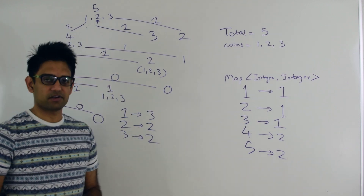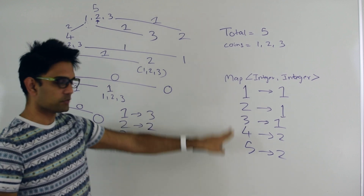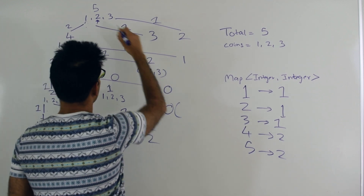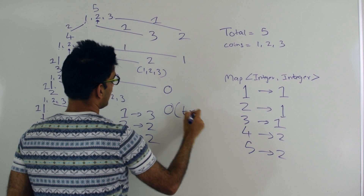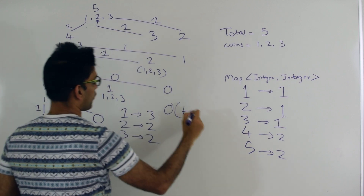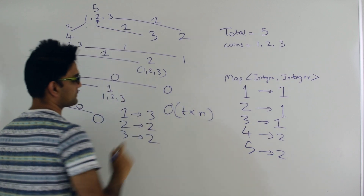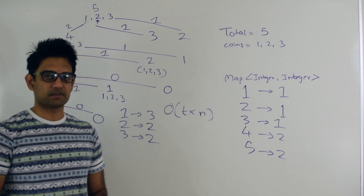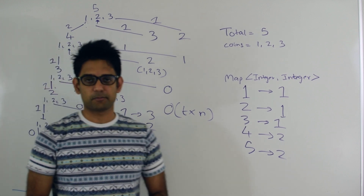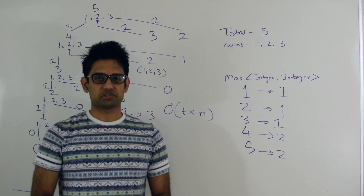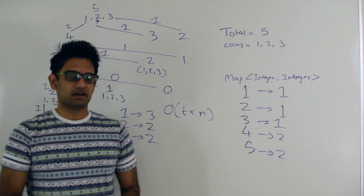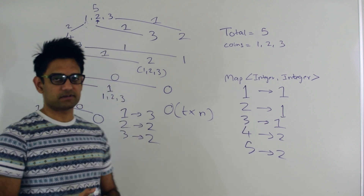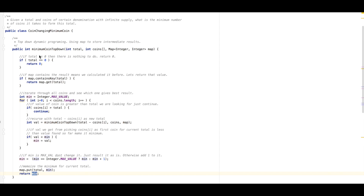The time complexity of this algorithm with memoization is O(T × N), where T is the total value and N is the total number of coins. Without memoization, the time complexity would be exponential. Now let's look at the code for this algorithm.